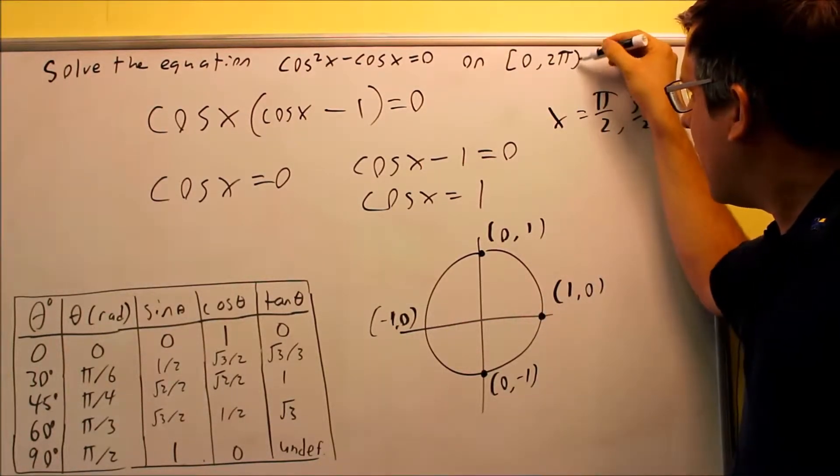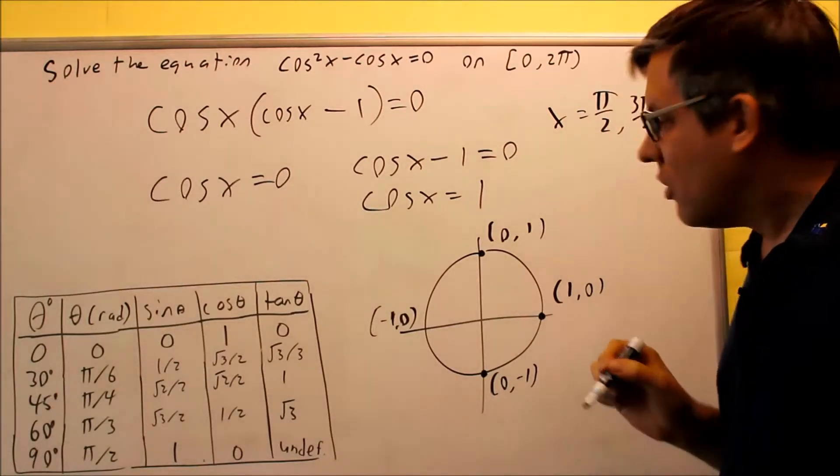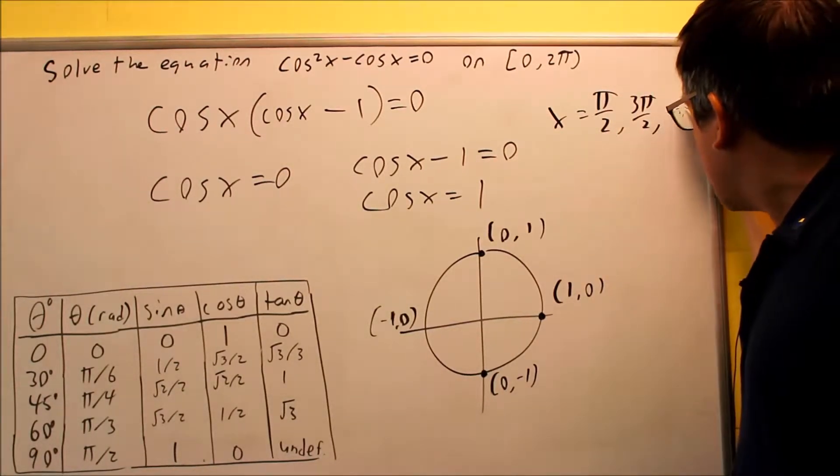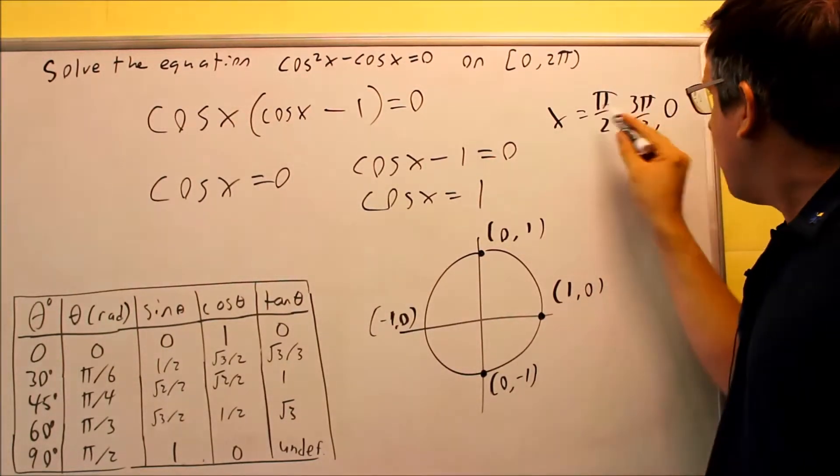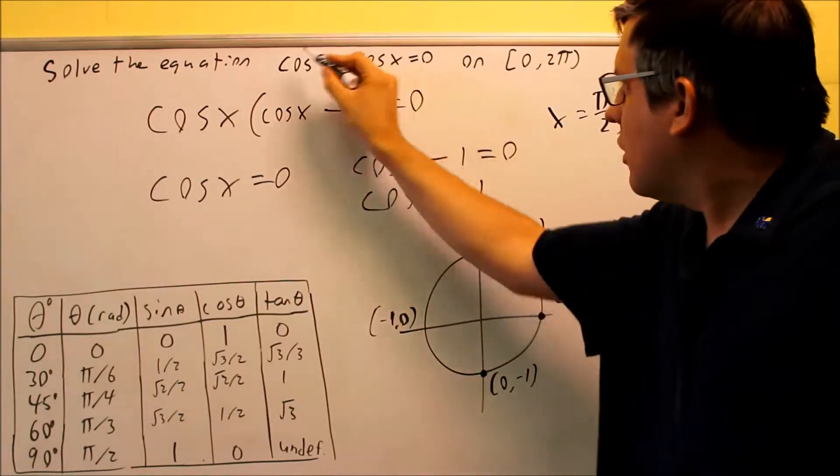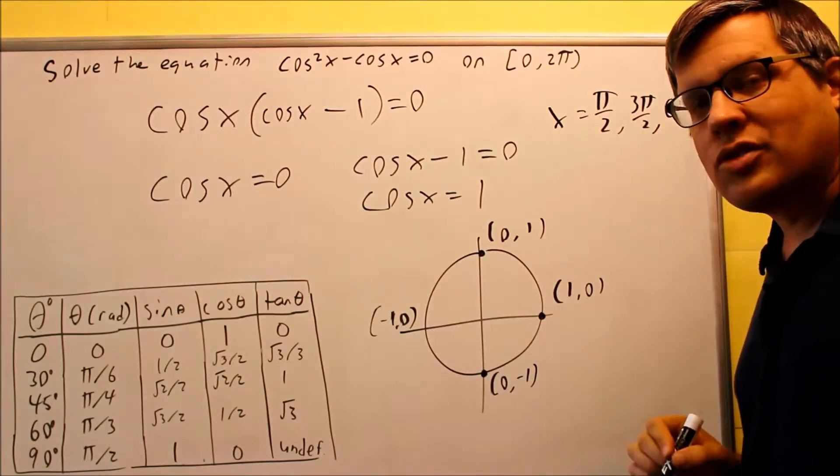However, we notice here that two pi is not included on our interval, so that means the other answer is just going to be zero. So these would be the three answers on this. If you put any of these three answers in and test it, you should always end up with a zero.